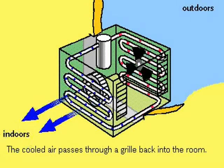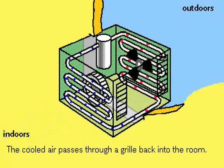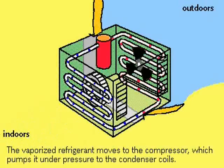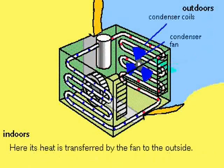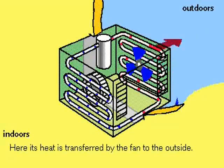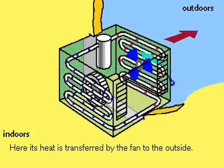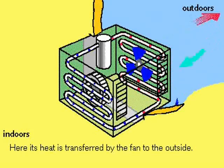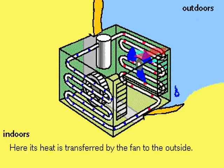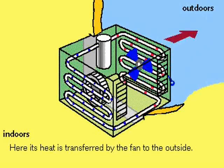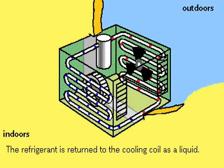The refrigerant gas is then compressed, increasing its temperature. To return to a liquid state, the refrigerant must give up its heat. This heat transfer is accomplished by having outdoor air blown through the condenser coils containing the compressed gas, thus cooling the gas and transforming it back to a liquid, which is then returned to the cooling coils.